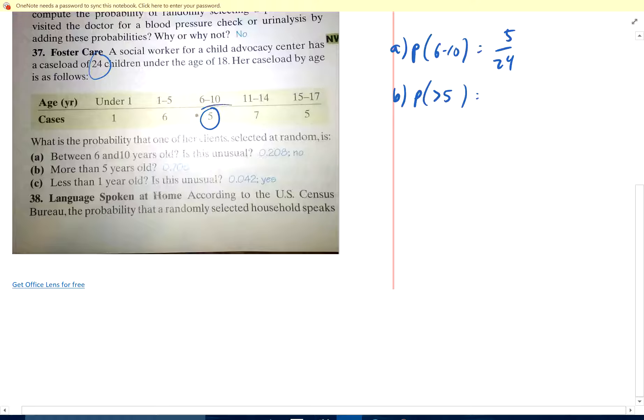Part B. Probability that's greater than 5. Greater than 5 would be all of these, 10, 17 over 24. Is it unusual? No, because that would be something that happens 28% of the time, which is not unusual. I wouldn't be surprised.